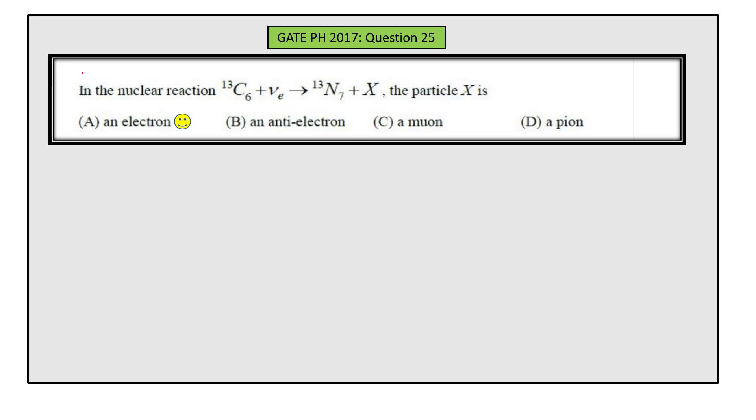Hi everyone, today I will be solving question number 25 from the GATE 2017 exam. In this question we are given one nuclear reaction and we need to find out the particle X. We'll solve this question by taking each option and eliminating them.